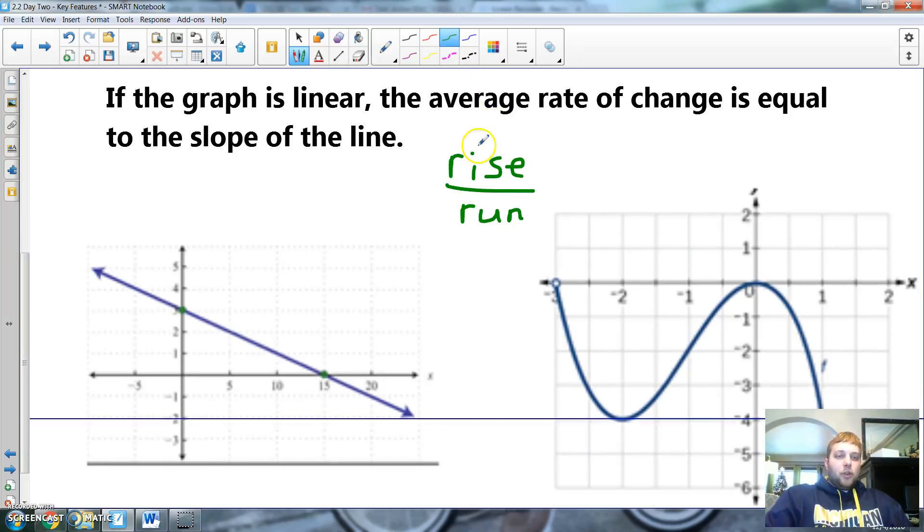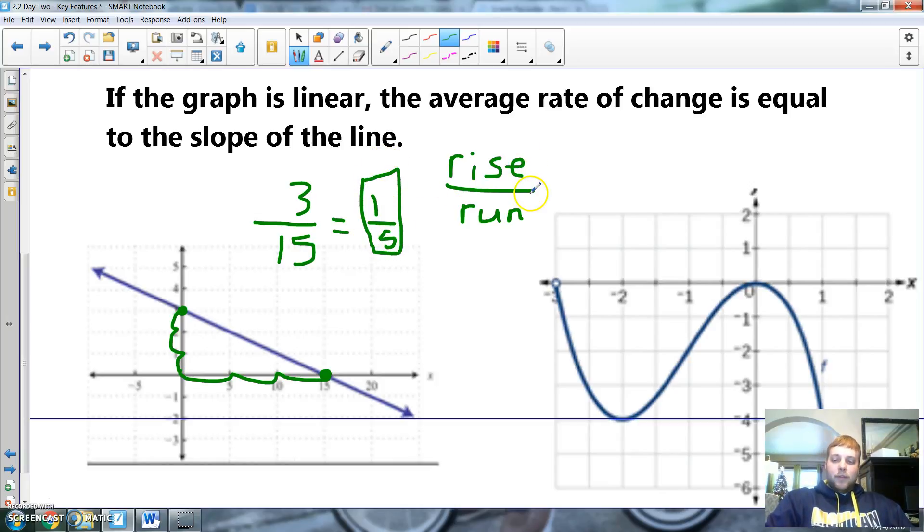Rise over run. So, what is my average rate of change? So, let's say between this point here and this point here. So, how much am I rising? So, I'm actually rising one, two, three. I'm rising three, and how much am I running? I'm running over five, ten, fifteen. Don't you dare say three. There are fifteen units there. So, that I can simplify as one-fifth. And so, between those two points, it's got an average rate of change of one-fifth.